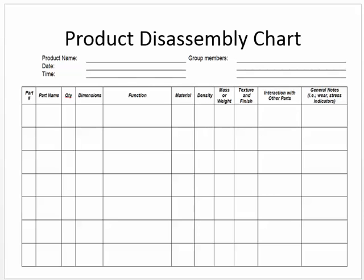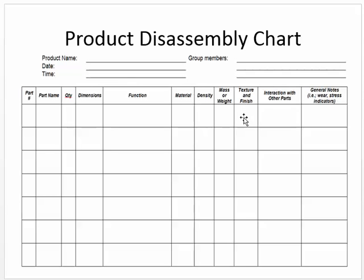Product disassembly chart: notice the following fields. Part number — simply assign a number: part 1, 2, 3, 4, and so forth. Part name — whether it's the windshield, the person, the rim, the tire, the axle, and so forth. Product name would be Automoblox. You can put today's date, time, and group members. Material — I'll give you a chart to fill in the material and you can find the density on there as well. You'll find the mass by weighing it on the scale. Texture and finish — is it smooth, clear, rough? Is it opaque, meaning you can't see through it?